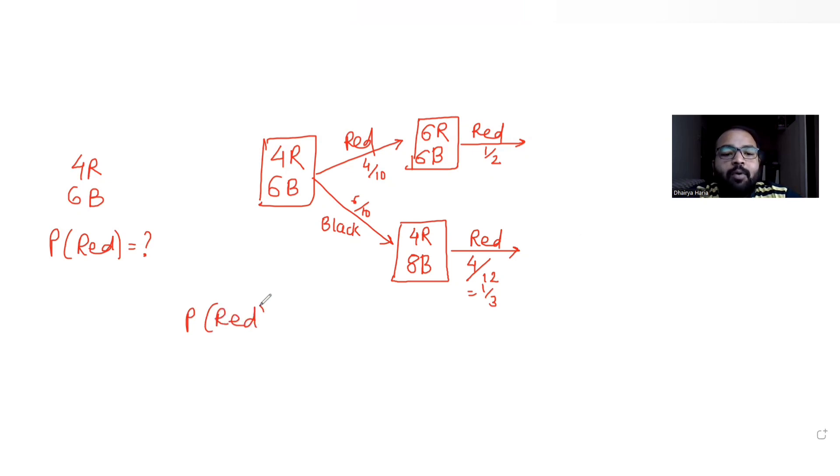Now I have to find the probability of getting a red ball. How do I get the probability of this red ball after both the cases are done? If it was red, 4 by 10, and after that to get a red ball I have a probability of half.